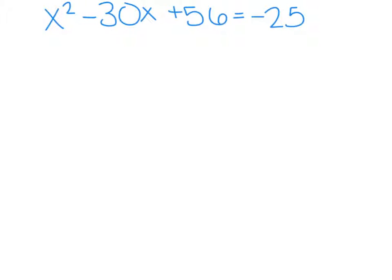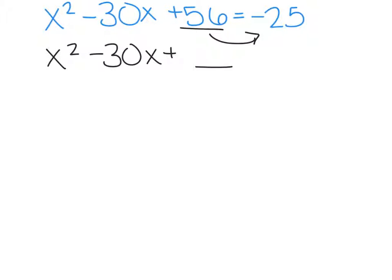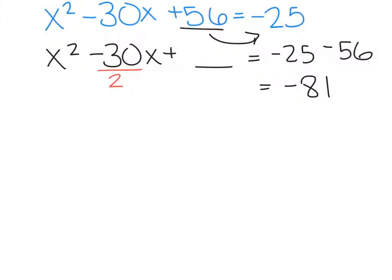Okay, let's try another example. So again, we want to try to get our constant on the other side. So we're going to rewrite it: x squared minus 30x plus whatever we're adding to it in the end equals negative 25 minus 56. So this side would end up equaling negative 81. You take half of your b, which is the 30, so half of 30 is 15, so then we have negative 15.